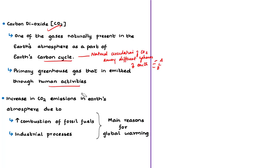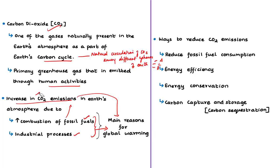Due to increased combustion of fossil fuels and various industrial processes, there are increased CO2 emissions in the earth's atmosphere, which is a main reason for global warming. To reduce the impact of global warming, we need to reduce CO2 emissions. This can be achieved by reducing fossil fuel consumption and increasing energy efficiency and energy conservation methods.